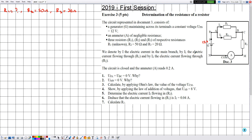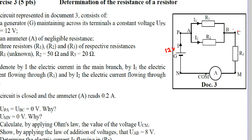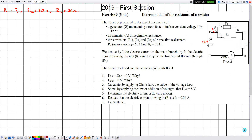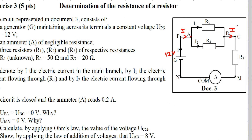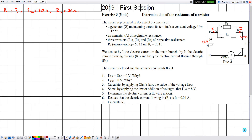We denote by I the electric current in the main branch, by I1 the electric current flowing through R1, and by I2 the electric current flowing through R2. The main branch PA is traversed by electric current I. R1 and R2 are not main branches — they are traversed by I1 and I2 respectively. At point A, the main current I splits into I1 and I2, and at point B, I1 and I2 rejoin to give the electric current I again.